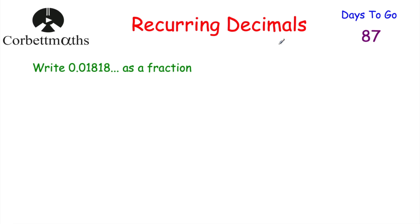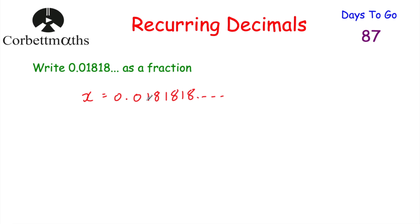In today's video we're going to look at how to write recurring decimals as fractions. You may have encountered recurring decimals before, such as 0.3333... which you know is a third. But let's look at how to write a recurring decimal such as 0.018181818... as a fraction. So whenever we're doing a question like this, we call what we start with x. So we've got x equals 0.018181818... and that just carries on forever. What we're going to do is multiply this by either 10, 100, or 1000 and so on.